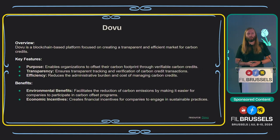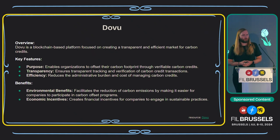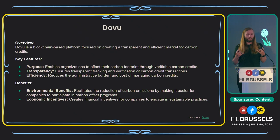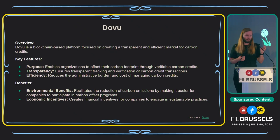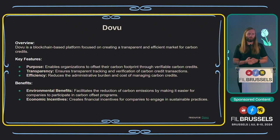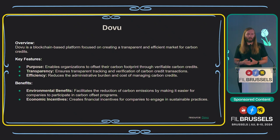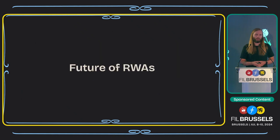Dovu is an ESG marketplace for carbon credits — they are tokenizing carbon credits and bringing trustlessness to prevent double-spending of green credits, as well as tracking where these carbon credits are originating. They work with the Guardian, and there are a lot of environmental benefits when you make sure carbon credits aren't being double-spent. You can have the trustlessness that when you buy one, it's real. Dovu is doing great work with the Guardian on Hedera.